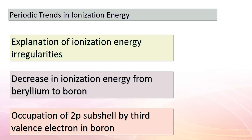Here, we witness a decrease in ionization energy. This change occurs because the third valence electron of boron must occupy the 2p subshell, which is unoccupied for beryllium. It's crucial to remember that the 2p subshell is positioned at a higher energy level compared to the 2s subshell, as illustrated in figure 6.24. This subtle shift in energy levels contributes to the observed phenomenon.